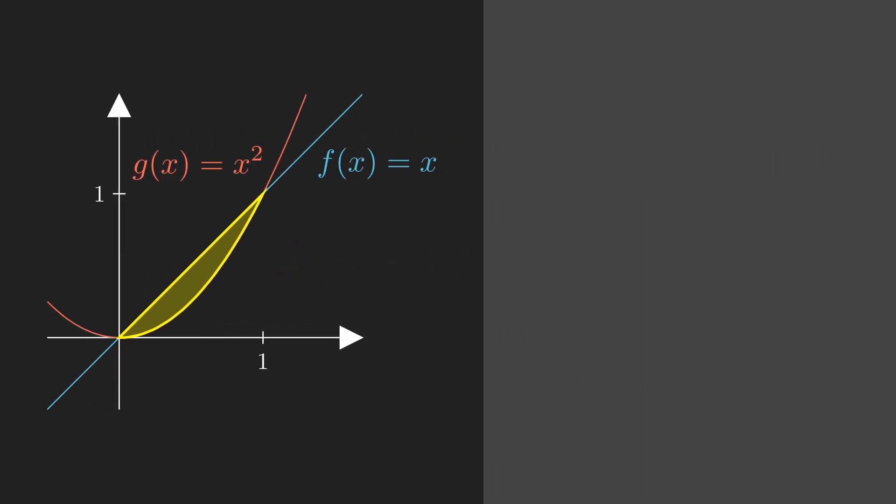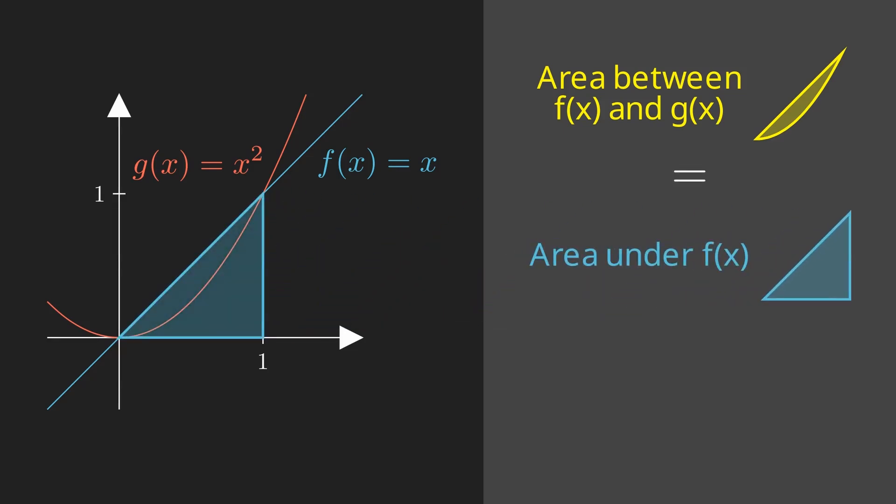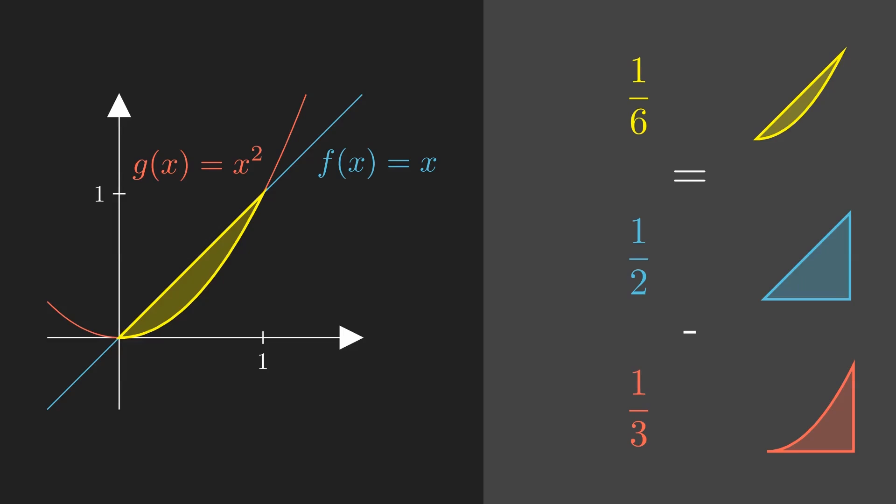Well, this area visually is simply the difference between the area under the curve of f of x on 0 to 1, denoted by this blue triangle, and the area under the curve of g of x equals x squared. The difference of these two areas will give that yellow region, and these areas are denoted by integrals. Computing the difference between these integrals will give us the area between these two curves, which is going to turn out to be 1 over 6.